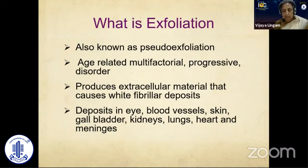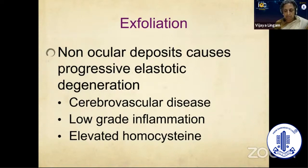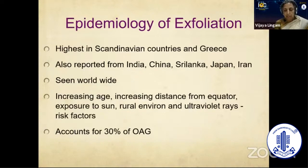Other than the eye, the deposits are seen in blood vessels, kidneys, gallbladder, heart, and meninges. Because of its extensive deposits in non-ocular structures, it causes progressive elastotic degeneration that leads to cerebrovascular and cardiovascular disease. It also causes ischemic disease, low-grade inflammation, and is associated with elevated serum homocysteine.